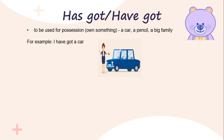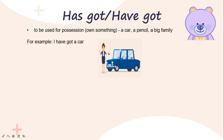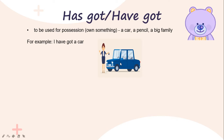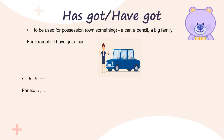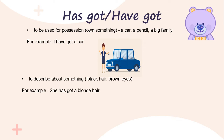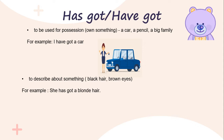Look at this picture — this girl has got a car. So when you are having something, you will use 'has got' or 'have got'. You can also use it to describe something about an object. When you want to describe, you will use 'has got' or 'have got'.